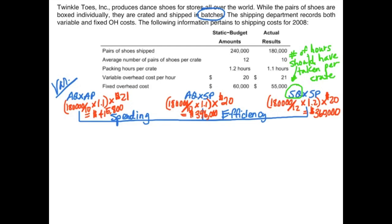Now we can begin computing our variances, starting with the spending variance. Pay attention to the equations: the only difference between the first and second peg equations is price — actual price versus standard price. We actually paid $21 per hour and should have spent $20 per hour, so we spent more than we should have — that's unfavorable. The difference between actual cost and the middle peg is $19,800, so our spending variance is $19,800 unfavorable.